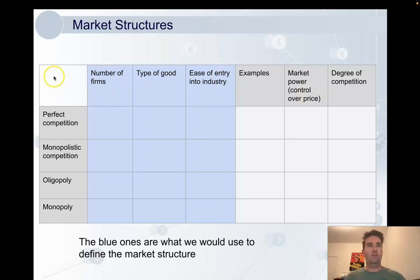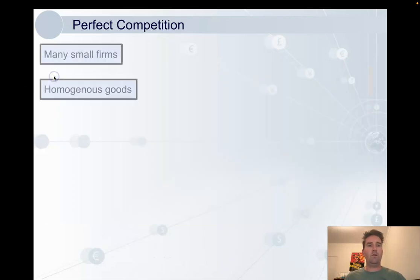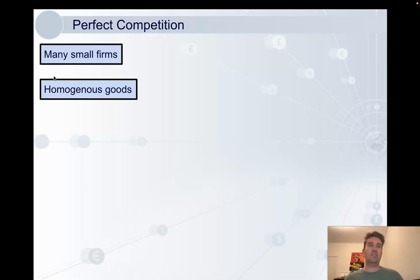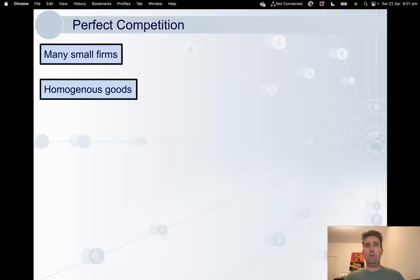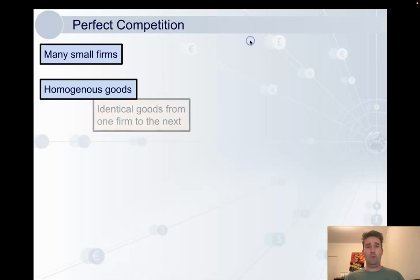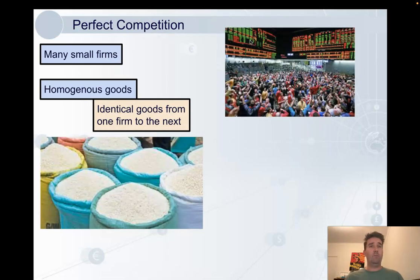Now we'll get on to perfect competition. Perfect competition is characterized by having many small firms that sell homogenous goods. Homogenous means the goods are identical from one firm to the next, which means consumers would have absolutely no preference as to which firm they buy from. An agricultural market would be a good example — wheat or rice, where each firm sells the same thing.